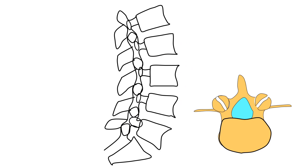In addition to a faster and clean image, the contralateral oblique image has another advantage: consistency.